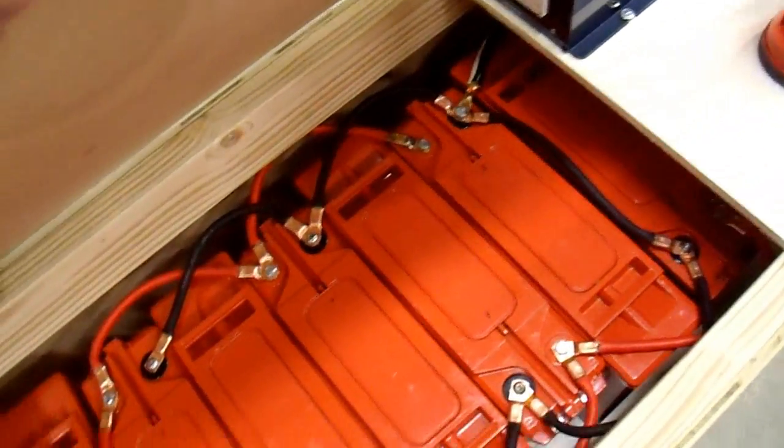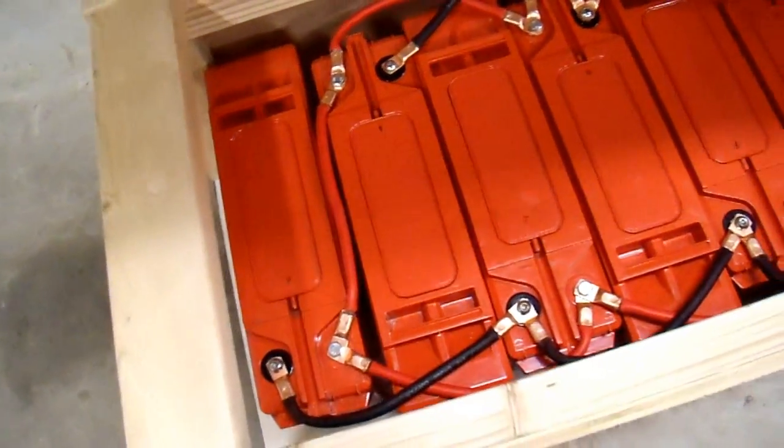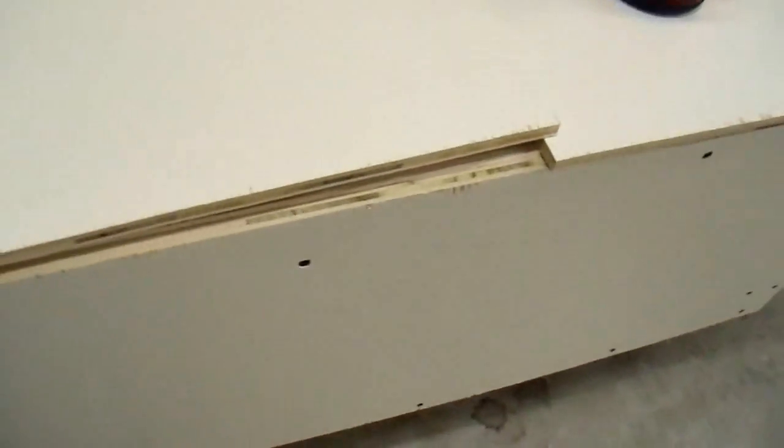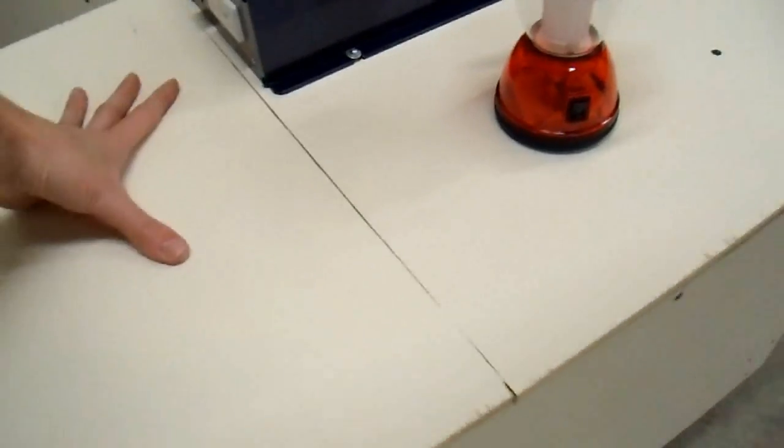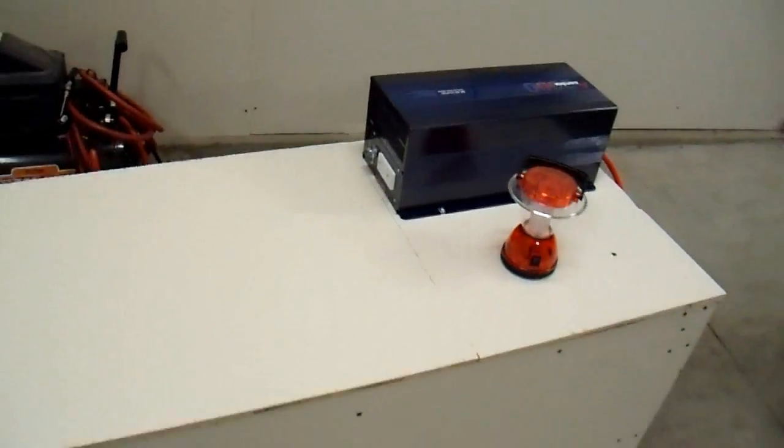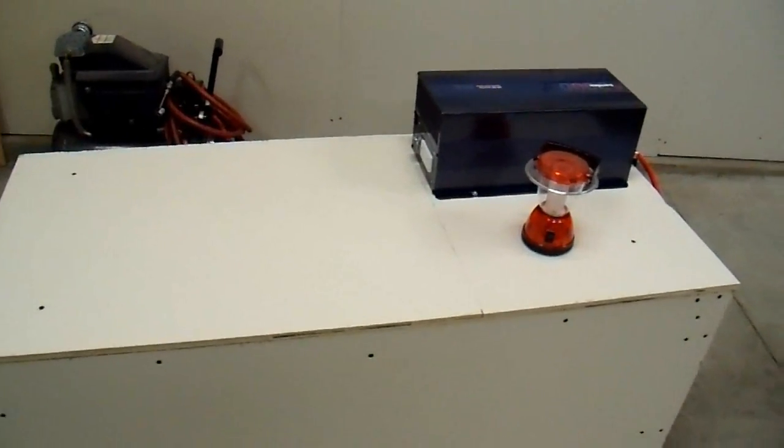But I just wanted to show you inside the battery box quick. There are a bunch of batteries in here, about 1,000 amp hours worth. And I put it on wheels so I can roll it around, and I think it should work pretty well. So I'm going to try hooking this up to my house today.